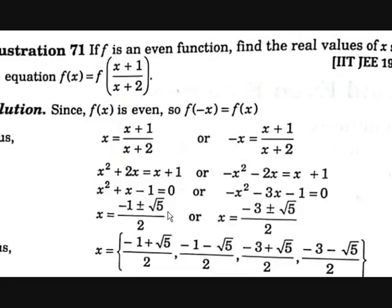Now let's see two examples. The first example: if f is an even function, find the real values of x satisfying f of x equals f of (x plus 1) divided by (x plus 2). Since f is even, f of minus x equals f of x. So x equals (x plus 1) divided by (x plus 2), and also minus x equals (x plus 1) divided by (x plus 2), because both sides equal f of x.